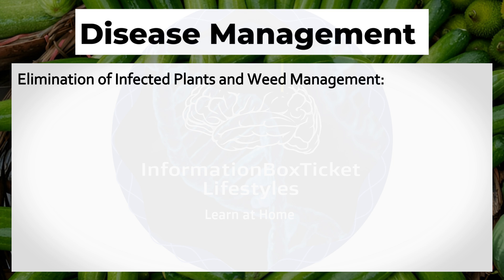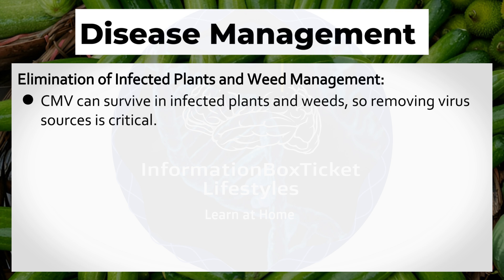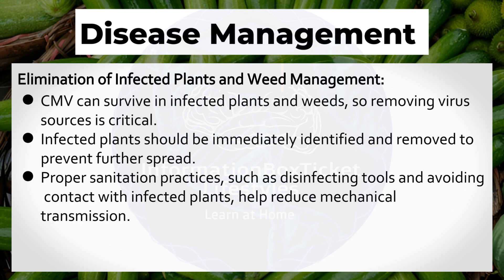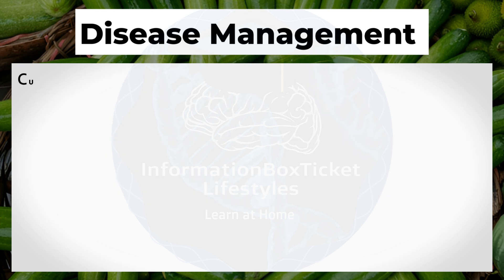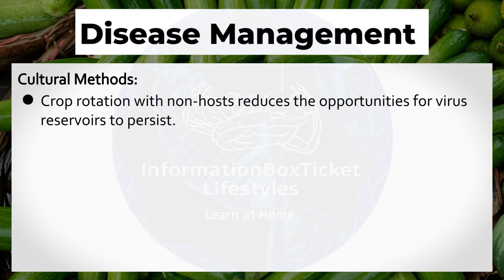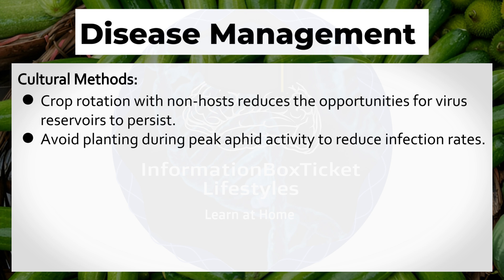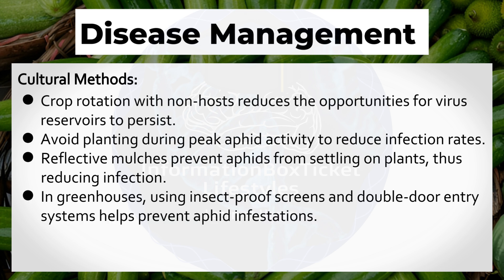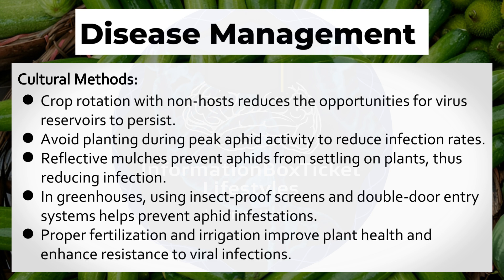Elimination of Infected Plants and Weed Management: CMV can survive in infected plants and weeds, so removing virus sources is critical. Infected plants should be immediately identified and removed to prevent further spread. Proper sanitation practices, such as disinfecting tools and avoiding contact with infected plants, help reduce mechanical transmission. Cultural Methods: Crop rotation with non-hosts reduces virus reservoir persistence. Avoid planting during peak aphid activity. Reflective mulches prevent aphids from settling on plants. In greenhouses, using insect-proof screens and double-door entry systems helps prevent aphid infestations. Proper fertilization and irrigation improve plant health and enhance resistance to viral infections.